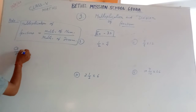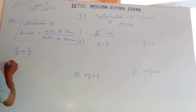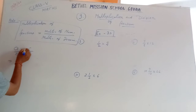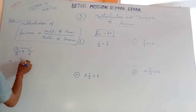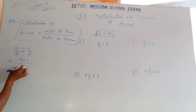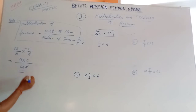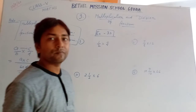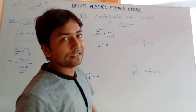Suppose there is a number A upon B and another number is C upon D, then you will multiply both numerators — A into C — and by both denominators you will multiply. I hope you got it. Now we do the exercise.